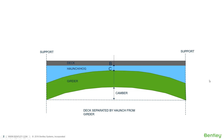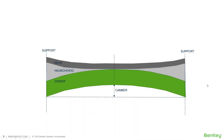Another valid option is where the camber, girder, haunch, and deck are arranged such that point B and point C are at equal elevation — meaning the top of the girder just touches the deck soffit. This is also a valid and correct configuration.